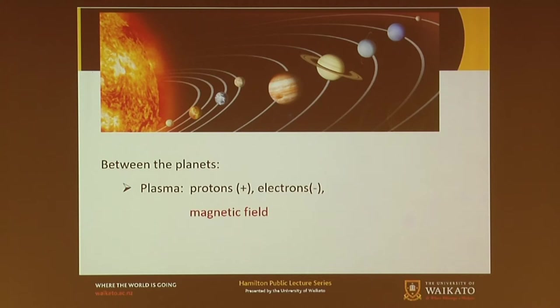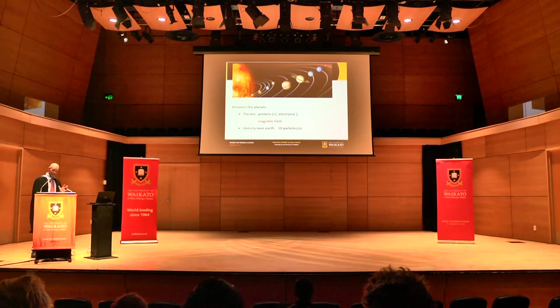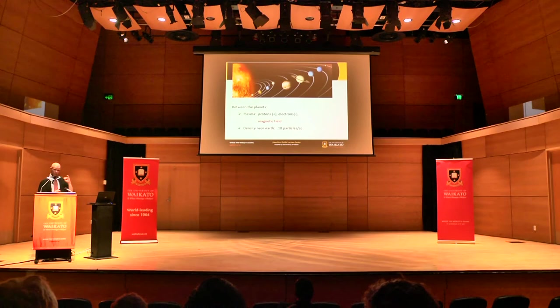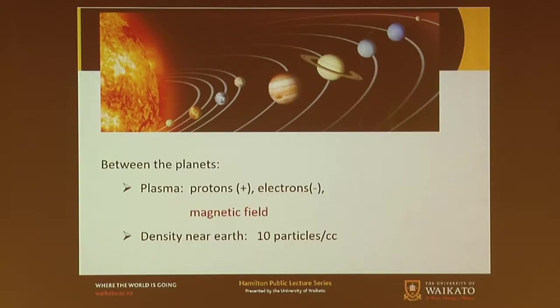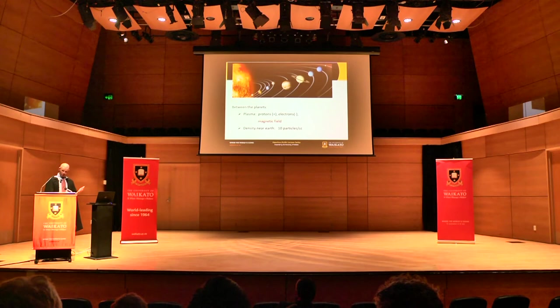That plasma is what fills the space between the planets. We have protons and electrons — positive and negatively charged things — making electric currents and magnetic fields. It's pretty thinly spread out though. In each cubic centimetre near Earth, there are roughly ten protons and ten electrons. As you go further out, it gets thinner. For comparison, the air we're breathing here has a billion billion times more particles per cubic centimetre — ten to the power of 19. So space is full, but not compared to what we have here on Earth.